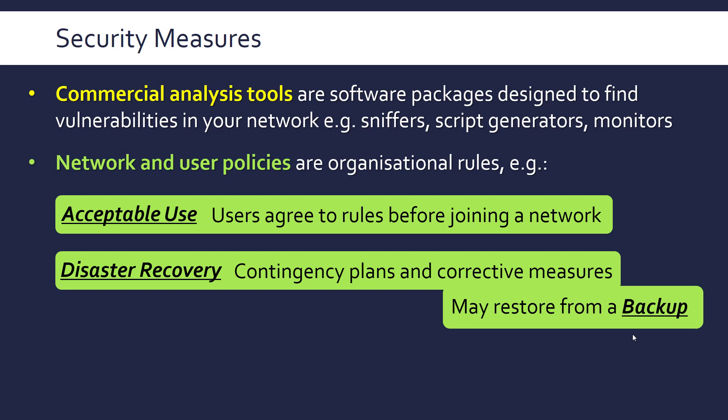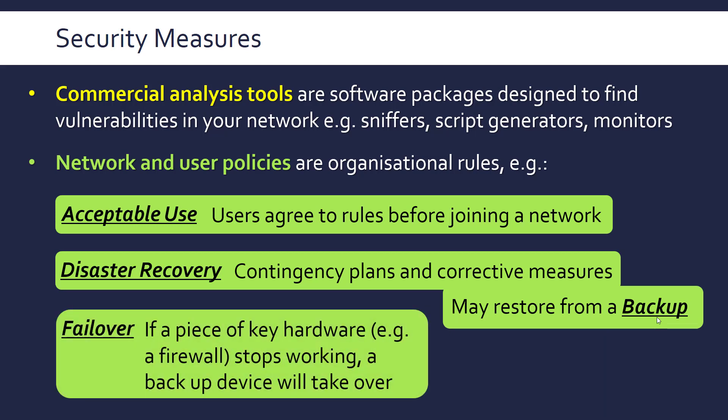In more serious cases, if the network needs to be reset, you'd restore from a backup if a backup policy is in place. Having a backup of data is very good, but it's another target that could be attacked, so you must ensure it's encrypted. Finally, the failover policy is about having a backup hardware device to take over if a piece of hardware fails, ensuring no downtime. For example, if a physical firewall in a router goes down, you're immediately exposed to unfiltered packets, so a backup device to take over immediately is very important, though expensive.